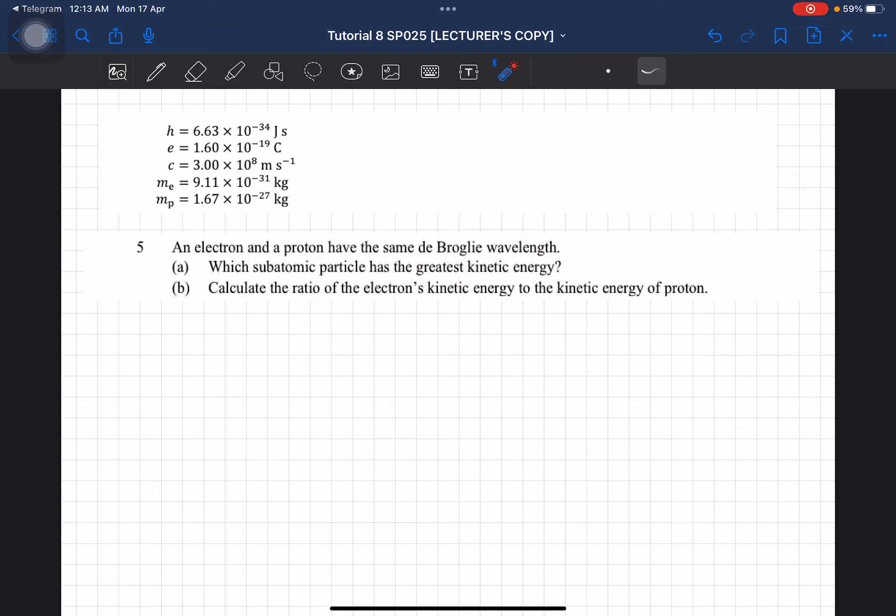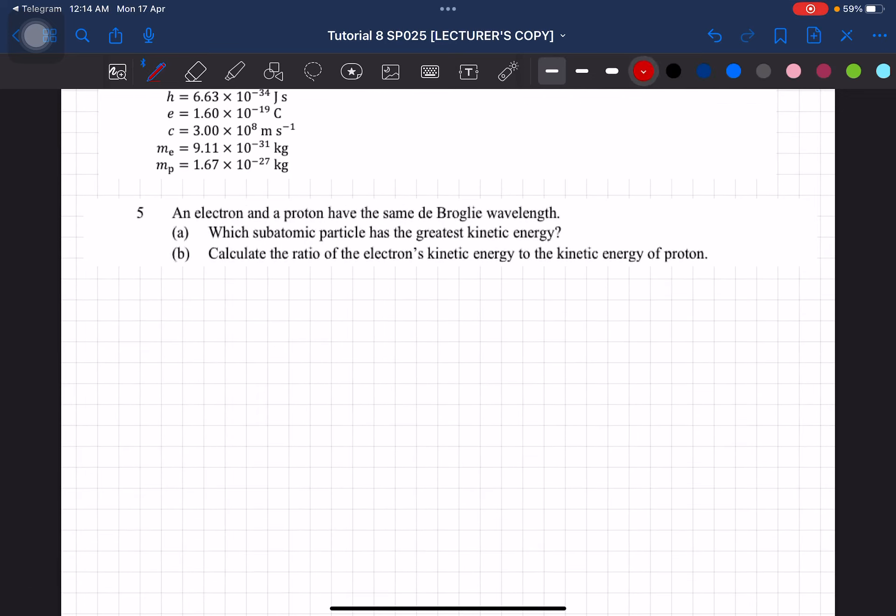Okay, so we know that kinetic energy is equal to half mv squared. But now, since we are talking about wavelength, we have to use the formula of kinetic energy yang ada relationship with the wavelength. So the only formula that we know that has a relationship with the wavelength is the de Broglie wavelength formula.